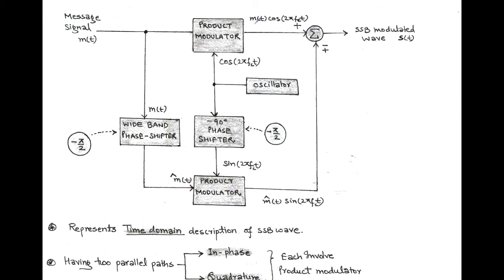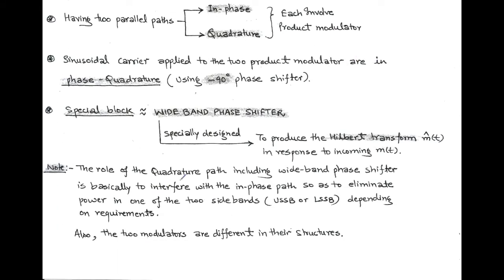The output of the in-phase path is m(t)·cos(2πf_c t), while the output of the quadrature path is m̂(t)·sin(2πf_c t). Both outputs are added using a summer. For the in-phase output we use a plus sign, and for the quadrature output we use a minus or plus sign — minus for upper single sideband and plus for lower single sideband — as per our requirement. The role of the quadrature path including the wideband phase shifter is basically to interfere with the in-phase path so as to eliminate the power of one of the two sidebands.